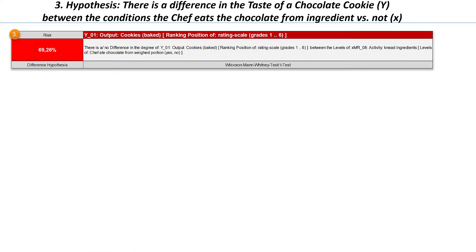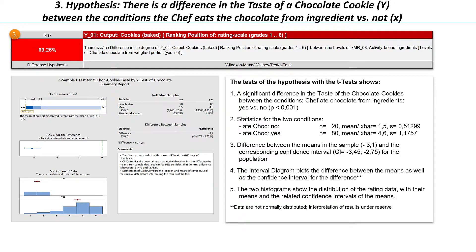The third hypothesis states there is a difference in the taste of a chocolate cookie between the condition where the chef eats the already-weighed chocolate from the ingredients versus not. Again, I choose the two-sample t-test, although not all conditions for this test are fulfilled here. We again obtain a significant result with a p-value smaller than 0.001. The statistics show a mean value of 4.6 if our chef nibbles chocolate from the ingredients, and if our chef does not nibble on the chocolate, then a mean value of 1.5 results. The difference between the ratings under these two conditions is thus 3.1, and the expected true difference in the population lies with 95% confidence in the interval between 2.75 and 3.45.